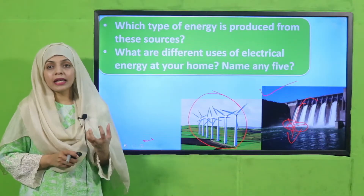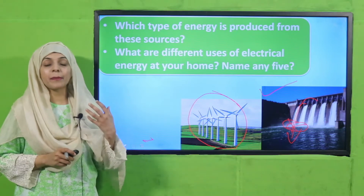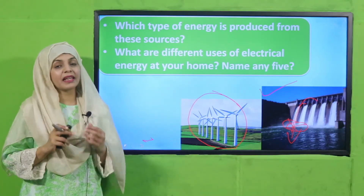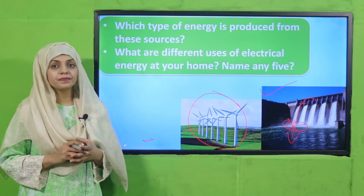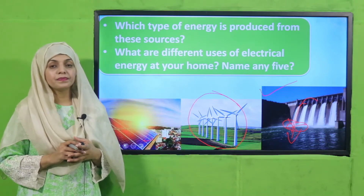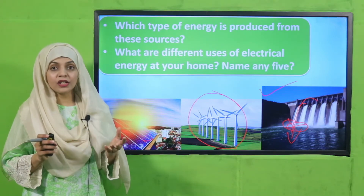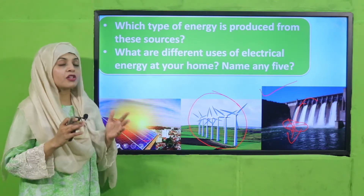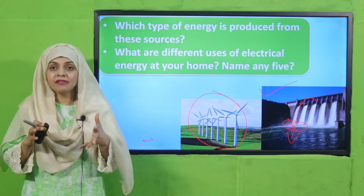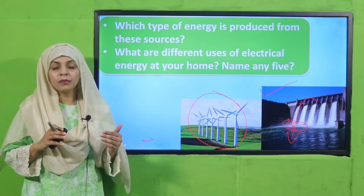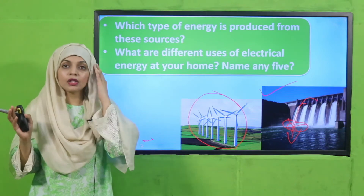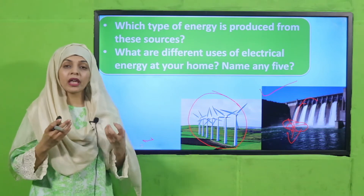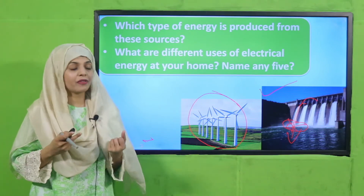What are the different uses of electrical energy? How do we use electrical energy at home? We use electrical energy to run fans, washing machines, fridges, AC, TV — all these things, even the light bulb you use, is working because of electrical energy.